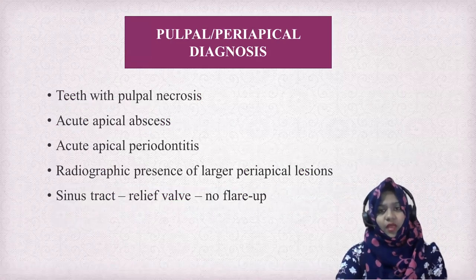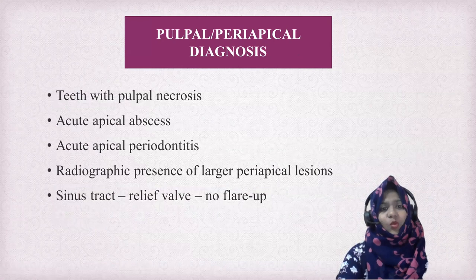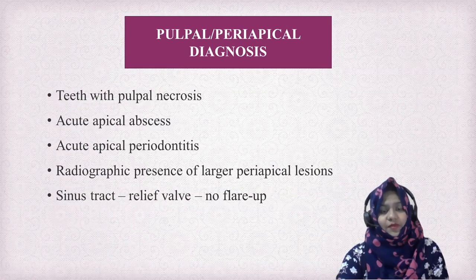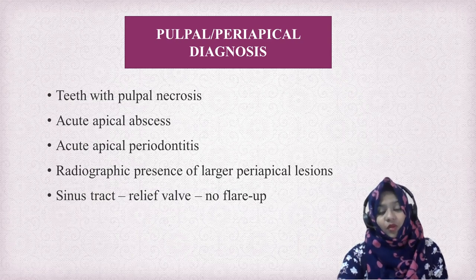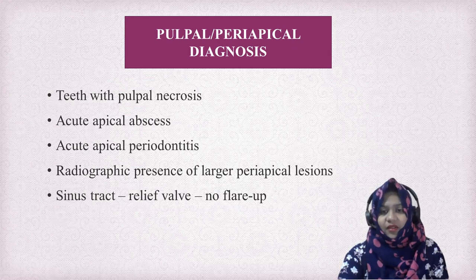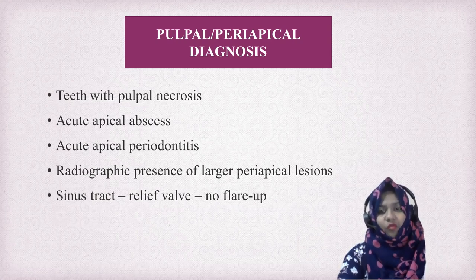The second risk factor is pulpal or periapical diagnosis. Teeth which have pulpal necrosis, acute apical abscess, periodontitis, or radiographic presence of larger periapical lesions all tend to cause an increased amount of inter-appointment flare-up. When there is a sinus tract, there won't be any flare-up because it acts as a relief wall.